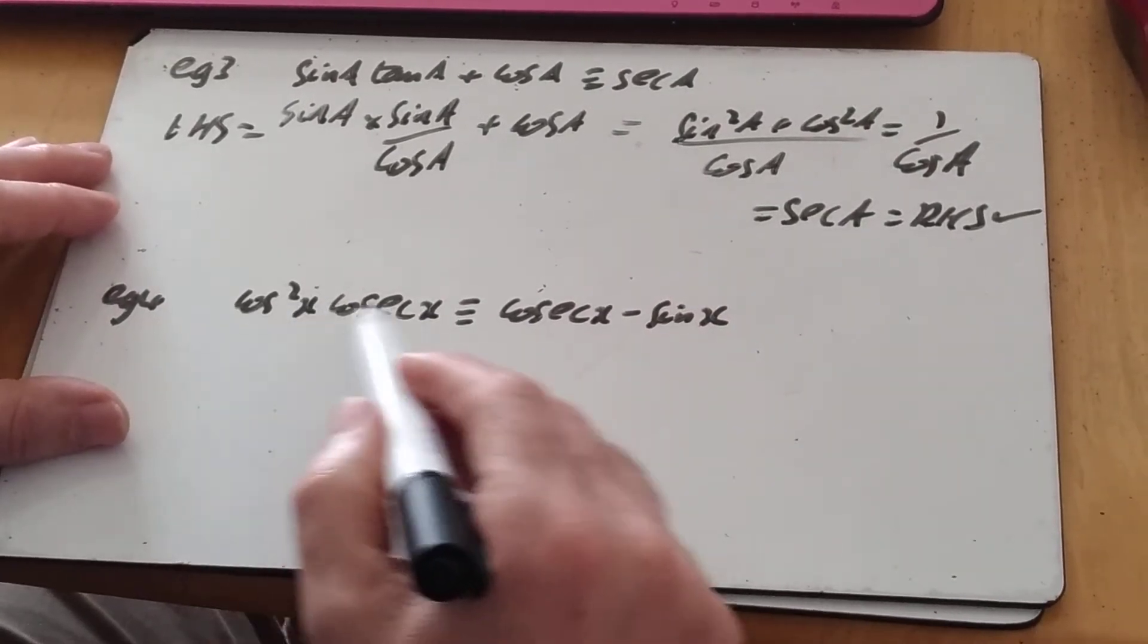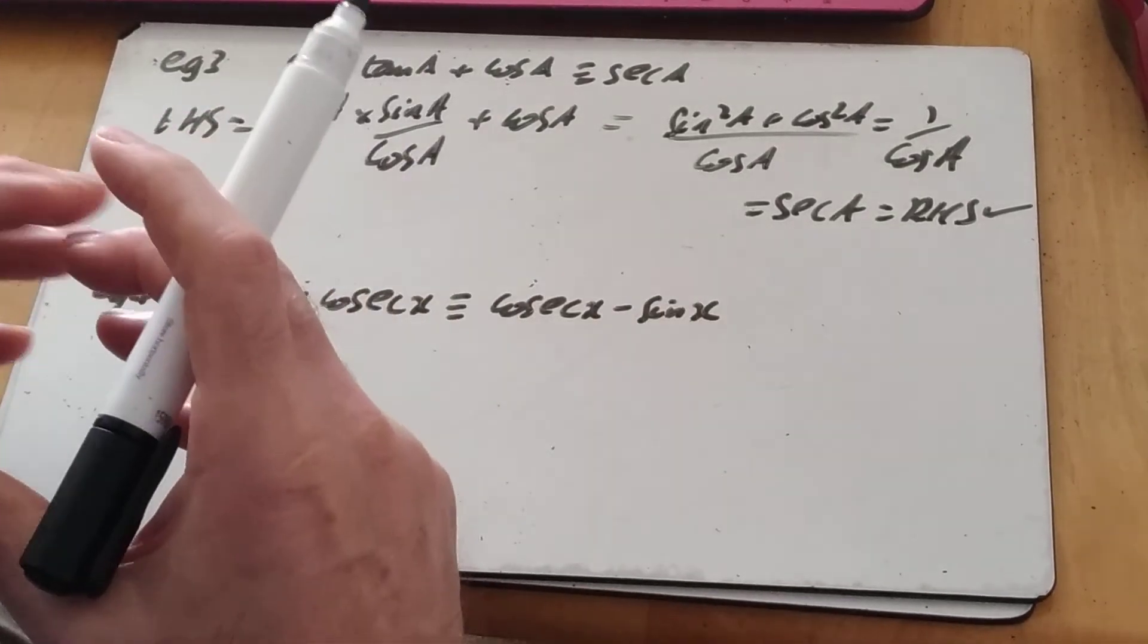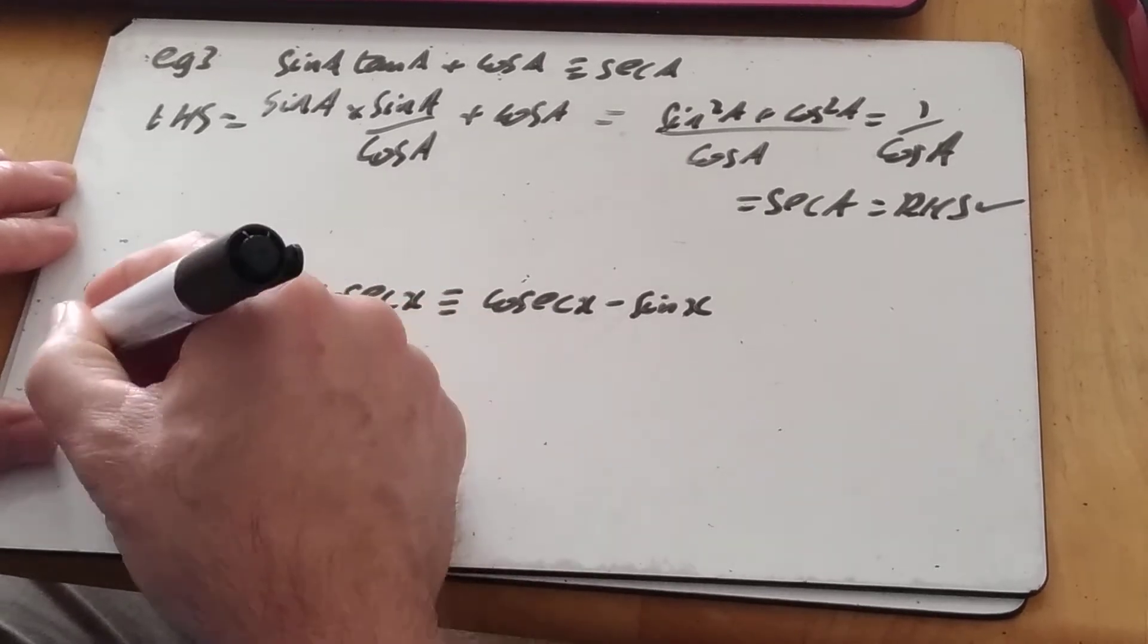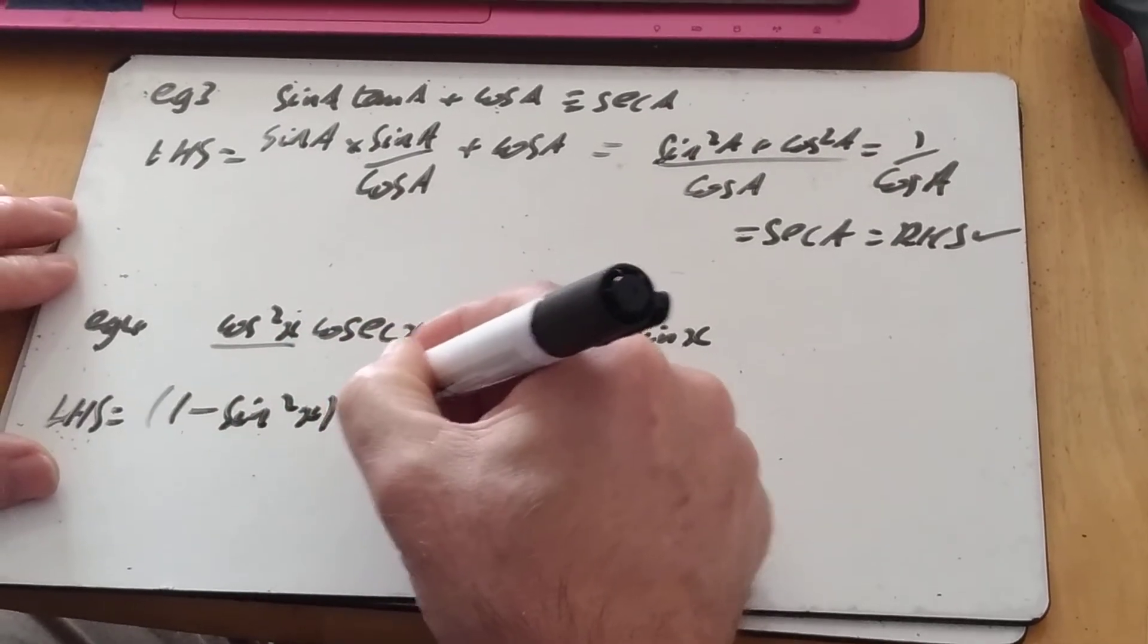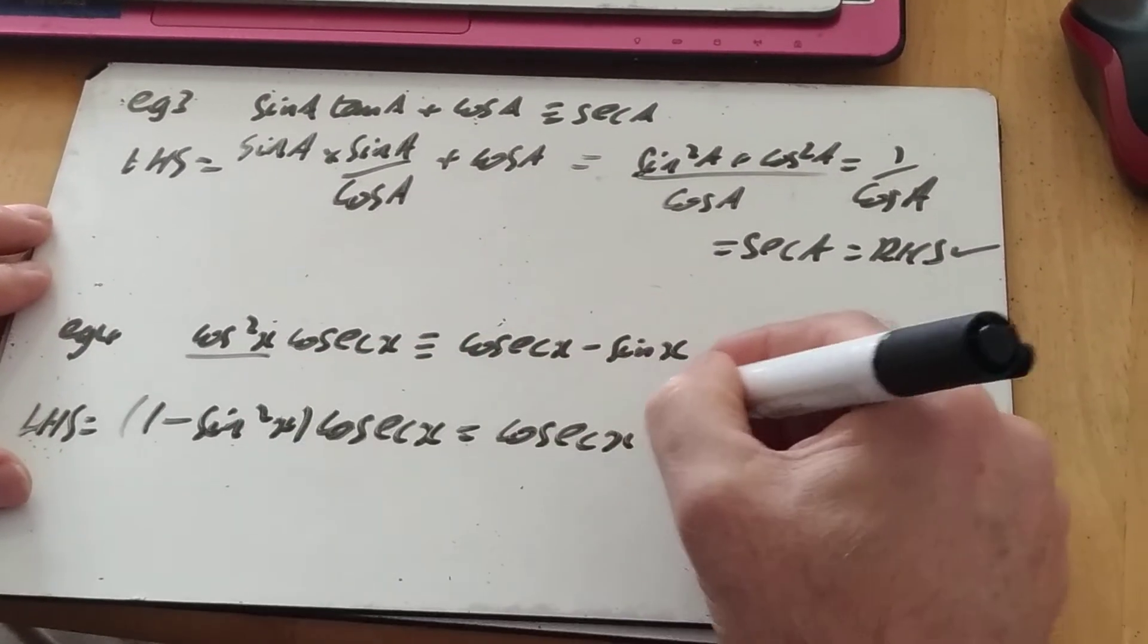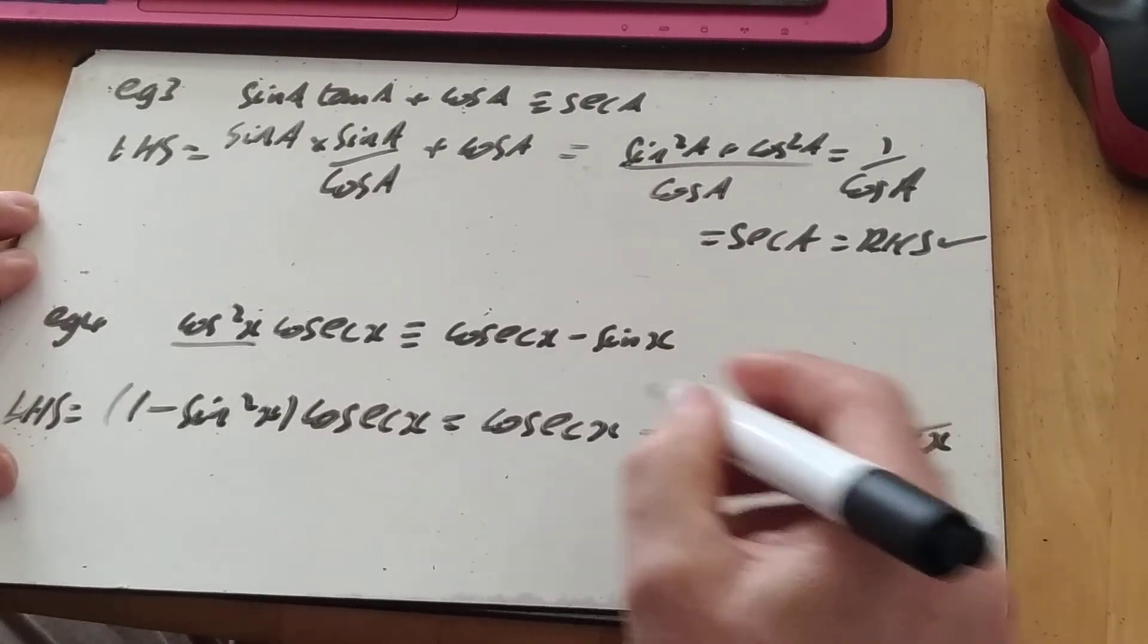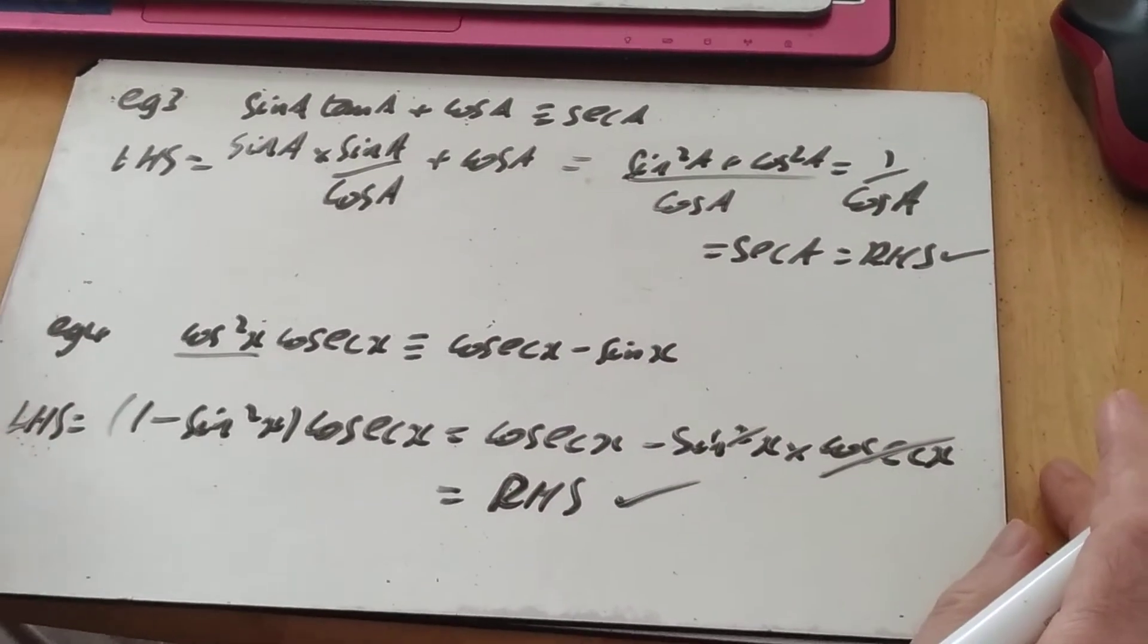This one's slightly different because I'm going from a product on this side to two terms on that. So the chances are, especially because I've got cos squared in, I might be rewriting one of the terms in terms of two other terms and multiplying it out. And it looks like, because I've got that cos squared, I can write 1 minus sine squared x times cosec. I'm good to go because I've got that 1 times cosec to get cosec. I can cancel that with one of those, and I've got the right-hand side there. Okay? So I'm good to go.